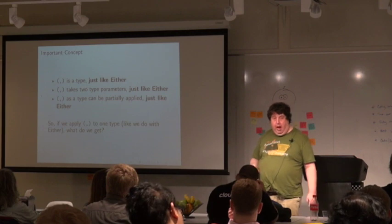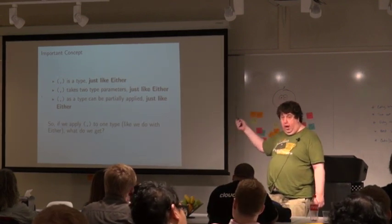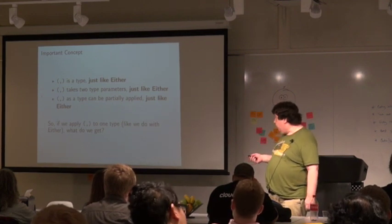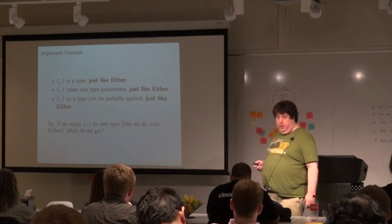The tuple type, comma, is a type, just like either. It takes two type parameters, just like either. And it can be partially applied, just like either. So, this is working exactly like what we've already seen.